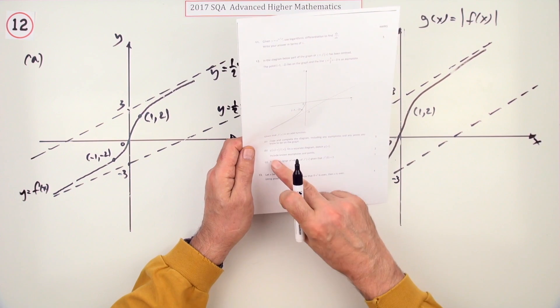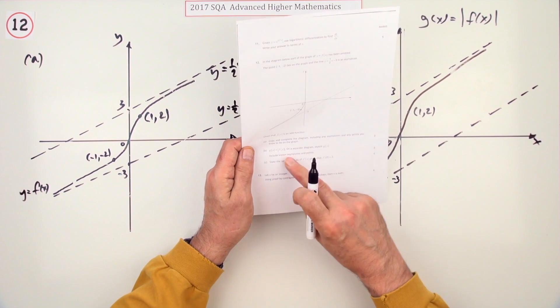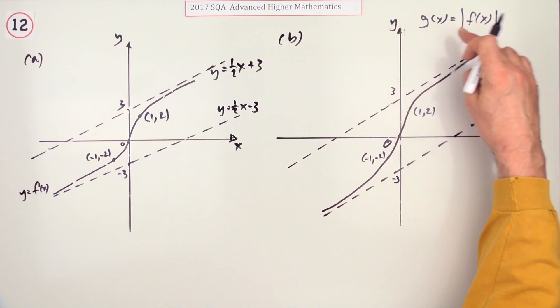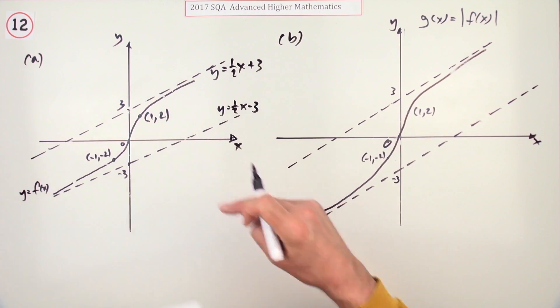Now part b for two marks. On a separate diagram, sketch the graph of g(x) where g(x) is the modulus of this.